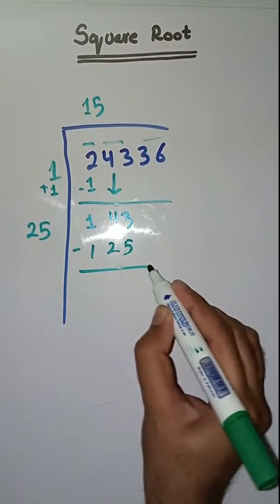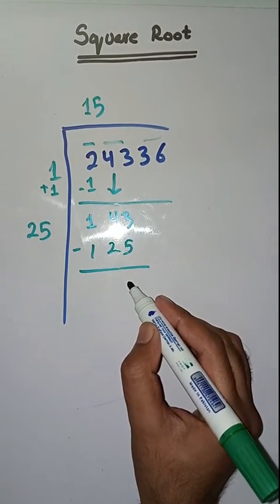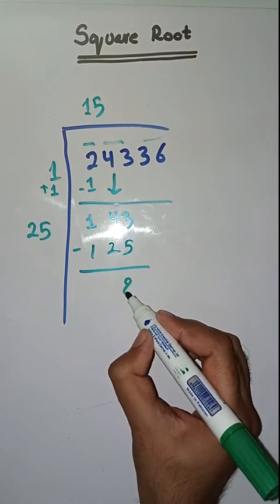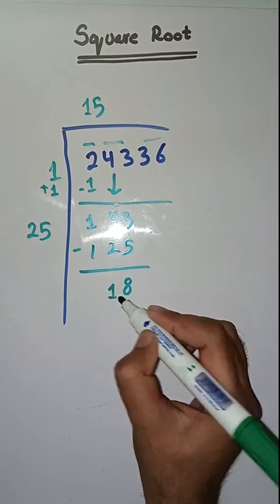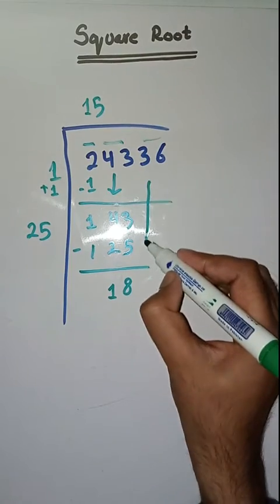Minus, we'll get 143 minus 125 is equal to 18. Three minus two is equal to one.